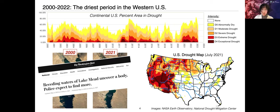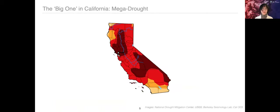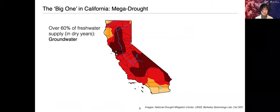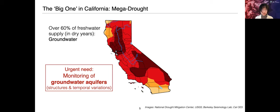If we think about the source of water supply — taking California, for example — in a dry year, over 60% of the freshwater supply comes from groundwater. Groundwater means the water stored below the Earth's surface, as opposed to surface water in lakes, rivers, and streams. Needless to say, there is urgent demand for a refined understanding about the groundwater aquifers, both the spatial structures as well as the temporal variations of groundwater systems.